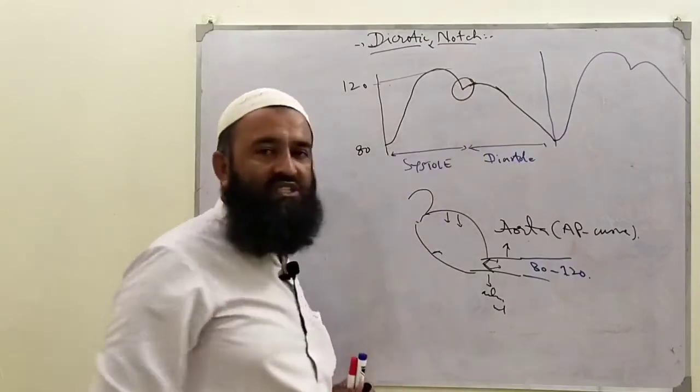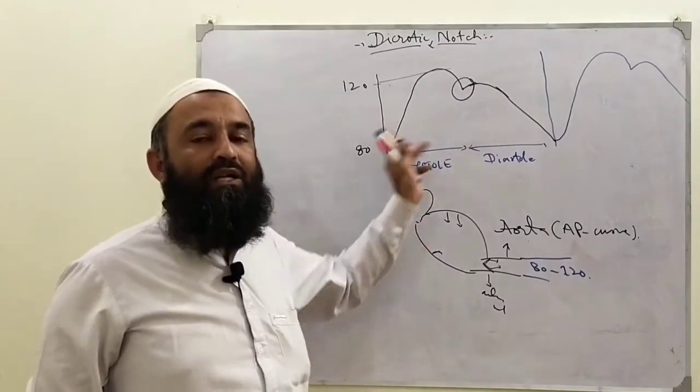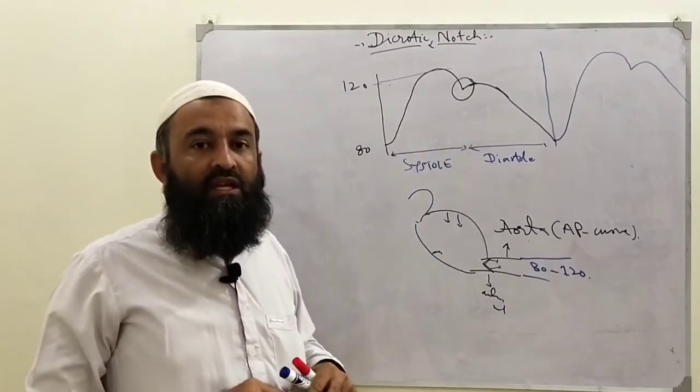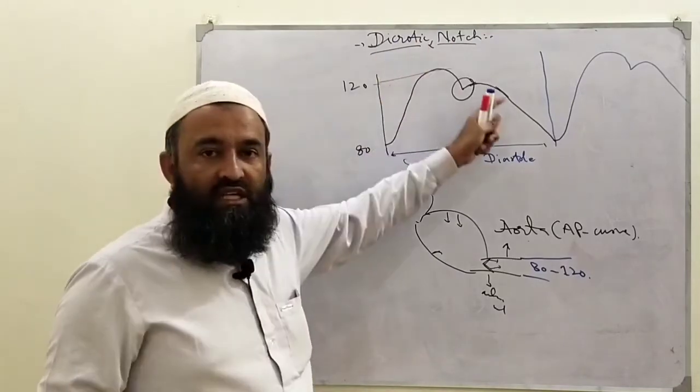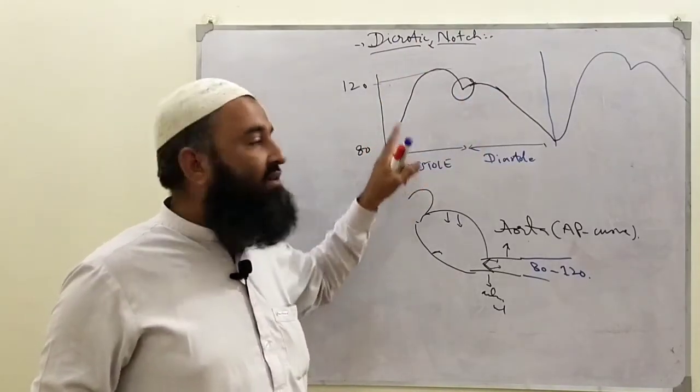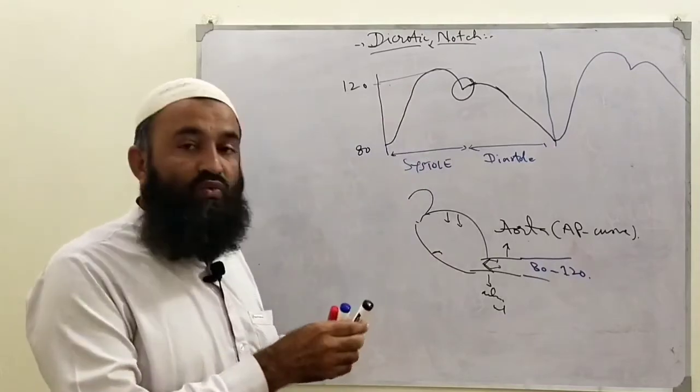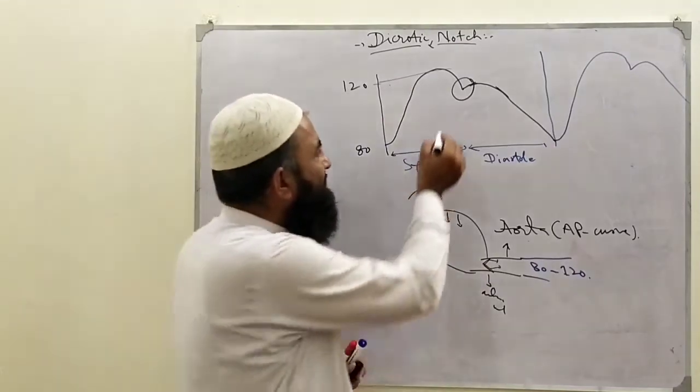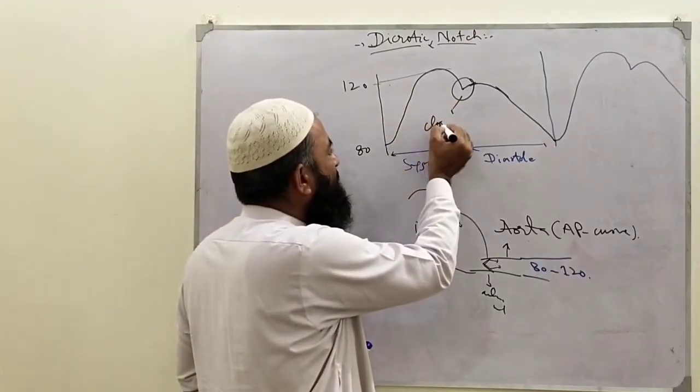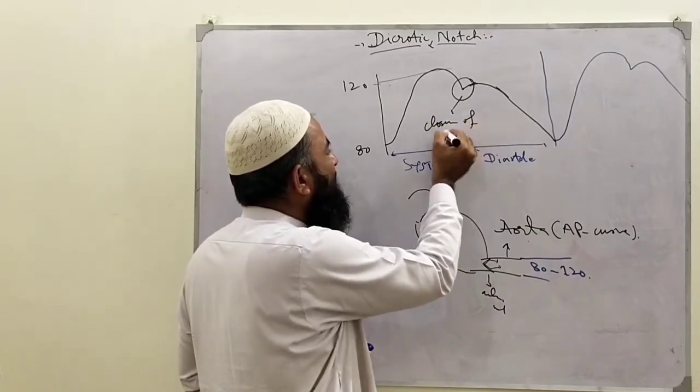Now this notch which is seen in the aortic pressure curve - this notch is due to what? Due to closure of the aortic valve.